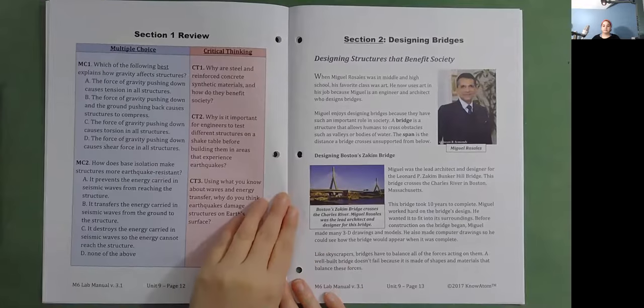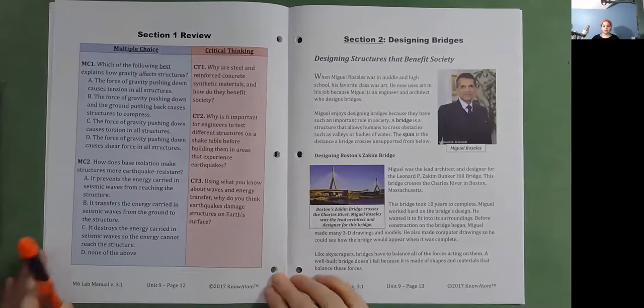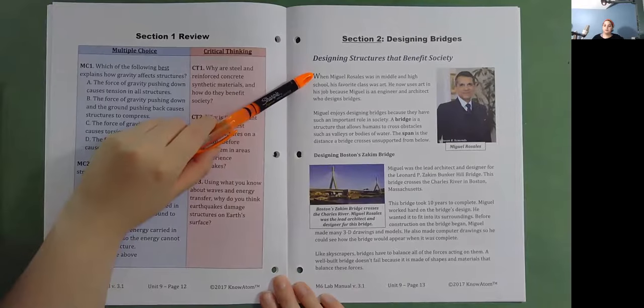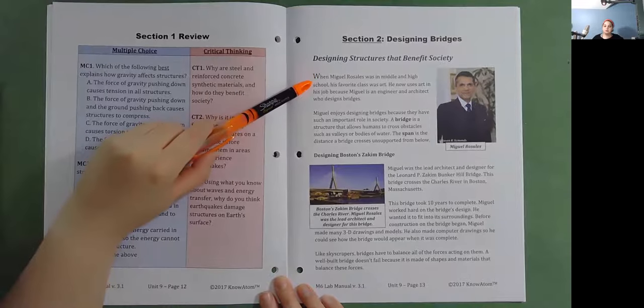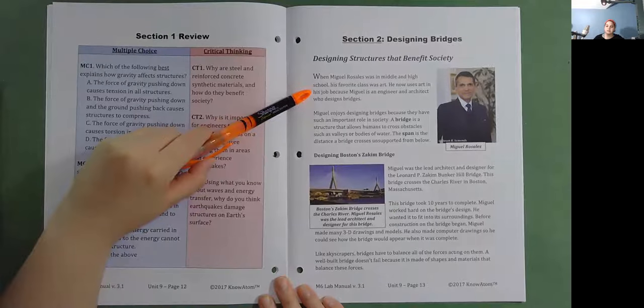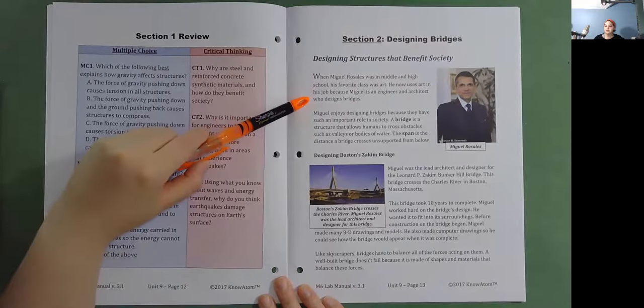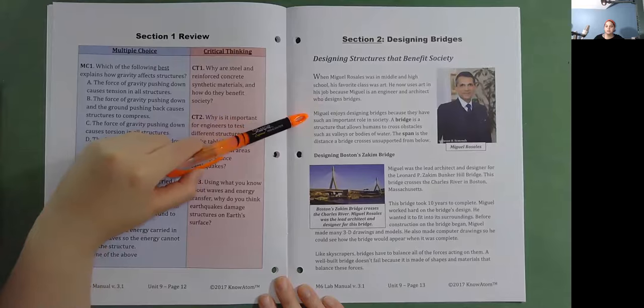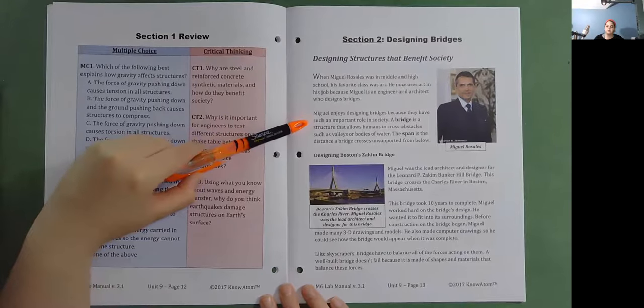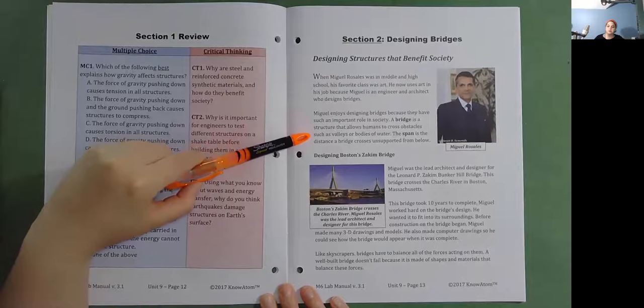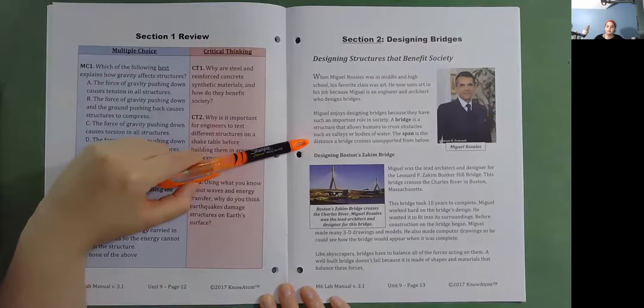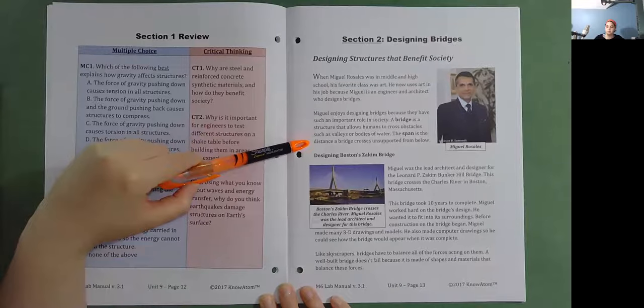Section 2. Designing Bridges. Designing Structures that Benefit Society. When Miguel Rosales was in middle and high school, his favorite class was art. He now uses art in his job because Miguel is an engineer and architect who designs bridges. Miguel enjoys designing bridges because they have such an important role in society. A bridge is a structure that allows humans to cross obstacles such as valleys or bodies of water. The span is the distance of bridge crosses unsupported from below.